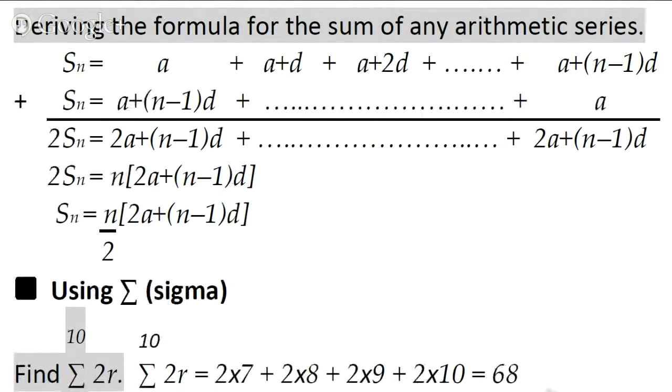So one of the things you've got to do in your A level maths exam is to be able to derive this formula which finds the sum of any arithmetic series. It goes like this: Sn equals n over 2 times 2a plus n minus 1d.